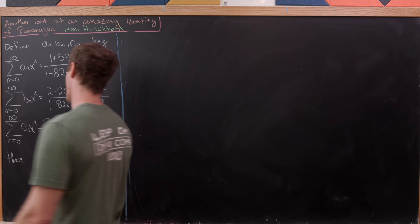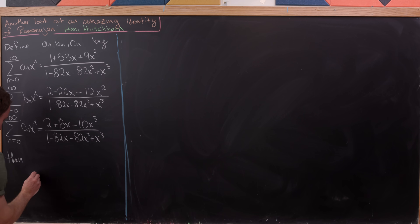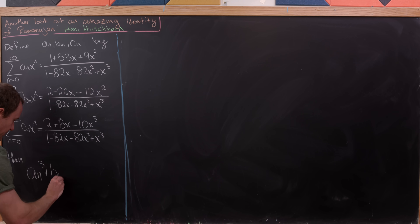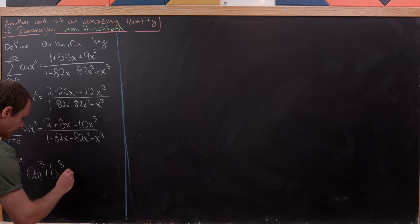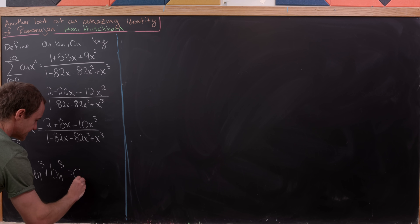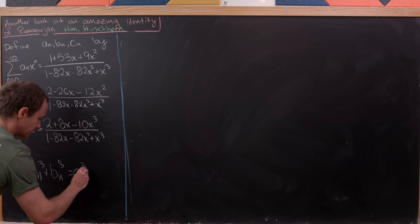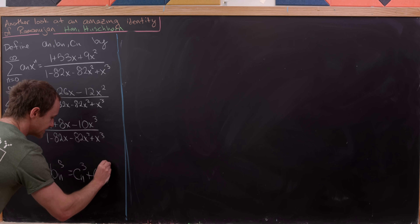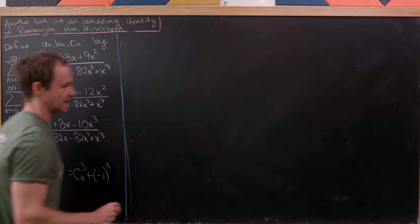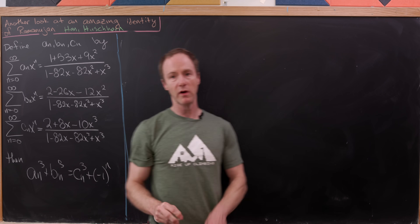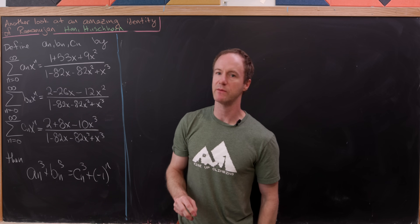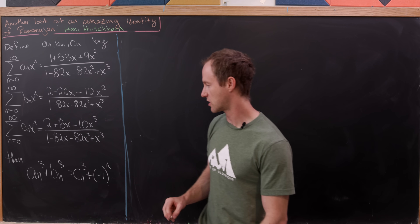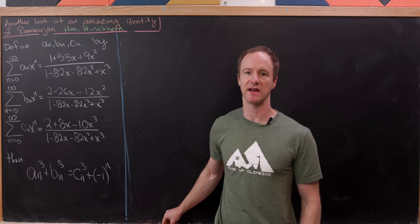Then what we have is A_N³ + B_N³ = C_N³ + (−1)^N. Let's see how we might get started proving this identity.